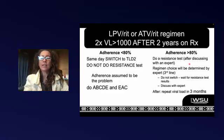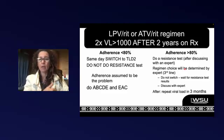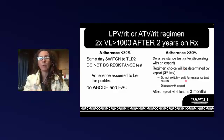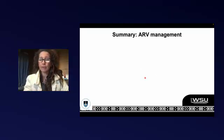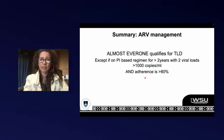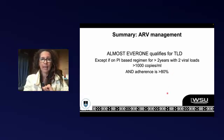If adherence is more than 80%, now we are concerned — this patient has taken the regimen for a very long time, is not suppressed, and is taking their treatment. Why is that viral load not undetectable? We will discuss with an expert for a resistance test. Depending on what's happening with the lopinavir/ritonavir, the third-line committee will decide if we can get away with TLD or need to add darunavir/ritonavir. In summary, almost everyone qualifies for TLD1 or TLD2 — except those on a PI-based regimen for more than two years with two viral loads over 1000 and adherence above 80%.